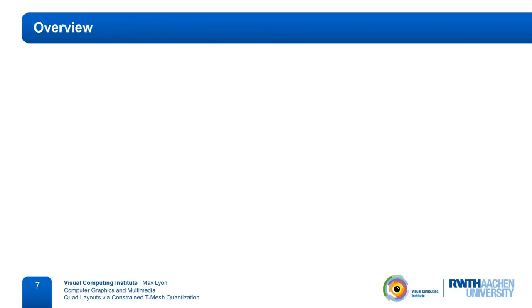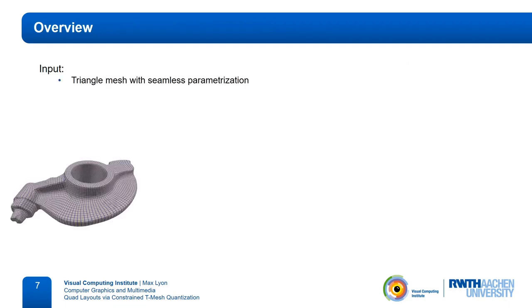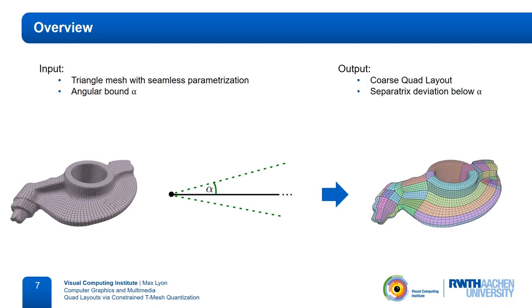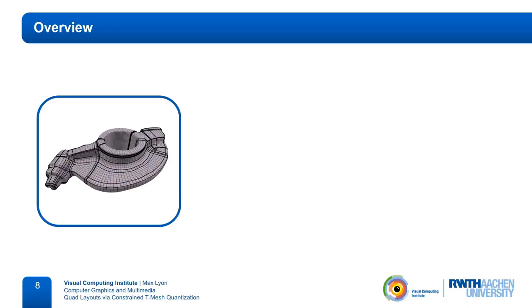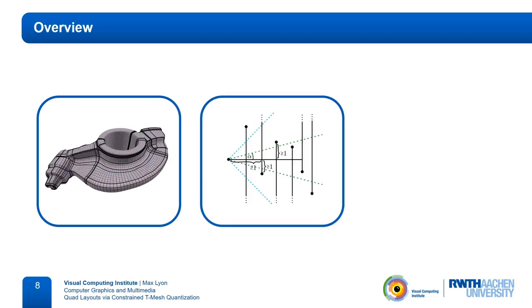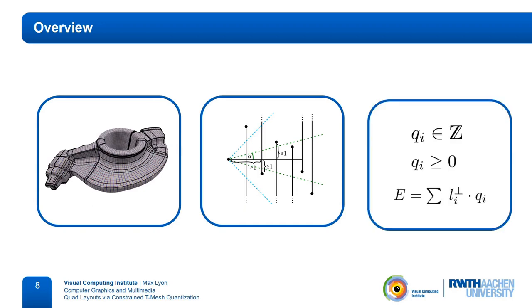Okay, so the goal of our method is, given a seamless parameterization and an angular bound alpha as input, compute a coarse quad layout in which every separatrix deviates from the isolines of the input parameterization by at most alpha. Our algorithm achieves this goal in three steps. First, we generate a t-mesh. Then, we specify constraints that enforce validity and quality. And finally, we find a quantization of the t-mesh that adheres to those constraints by solving an integer linear program.